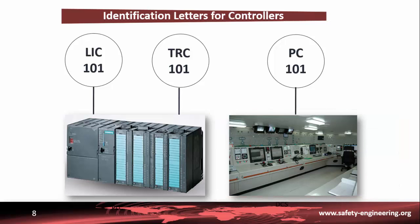Sometimes controllers have a recorder to save data in order to inform technicians or engineers. To indicate this feature, the letter R is placed in the second or third position. A recorder is a device that records the output of measurement devices. Many process manufacturers are required by law to provide a process history to regulatory agencies. Manufacturers use recorders to help meet these regulatory requirements, and also to collect data for trend analysis. By recording readings of critical measurement points and comparing those readings over time with process results, the process can be improved.